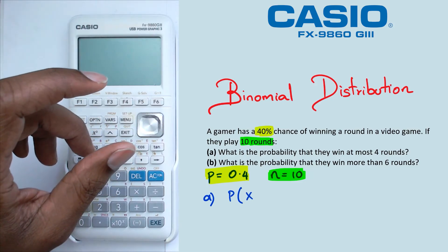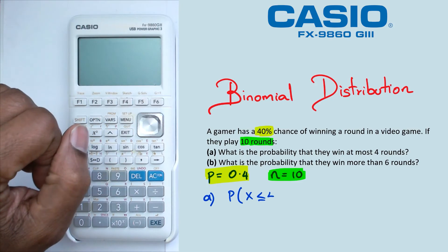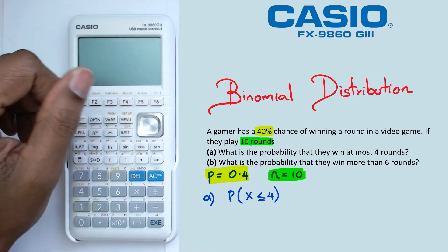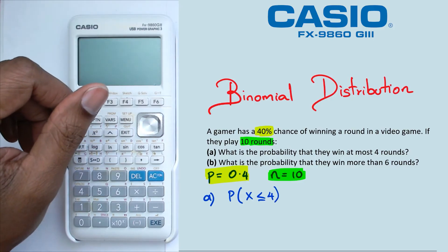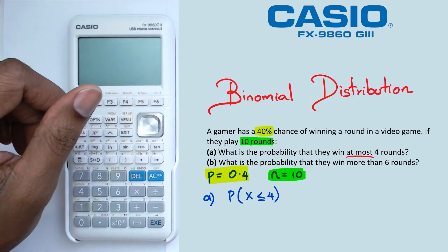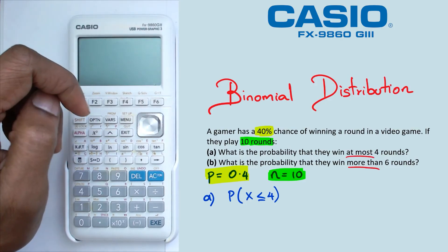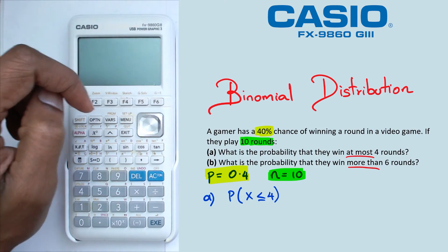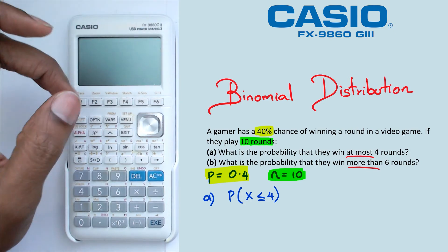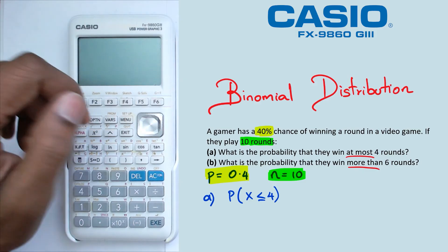Now I will drop a video later which will actually go in depth with these words: at most, more than, at least. And I think there's another combination there which we'll talk about in another video. As for now, we're looking for probability of X is less than or equal to four.